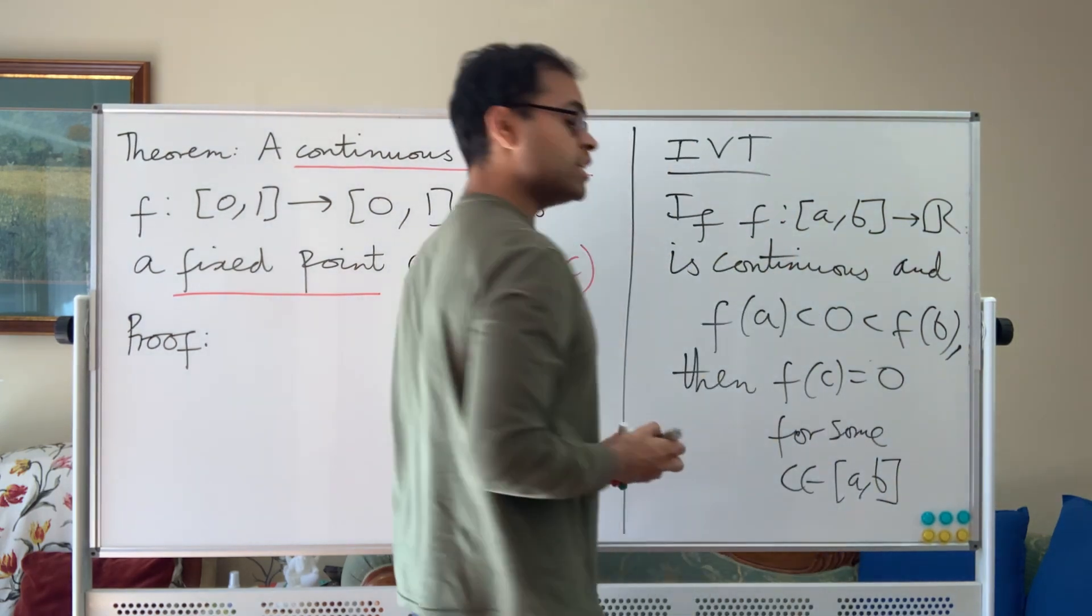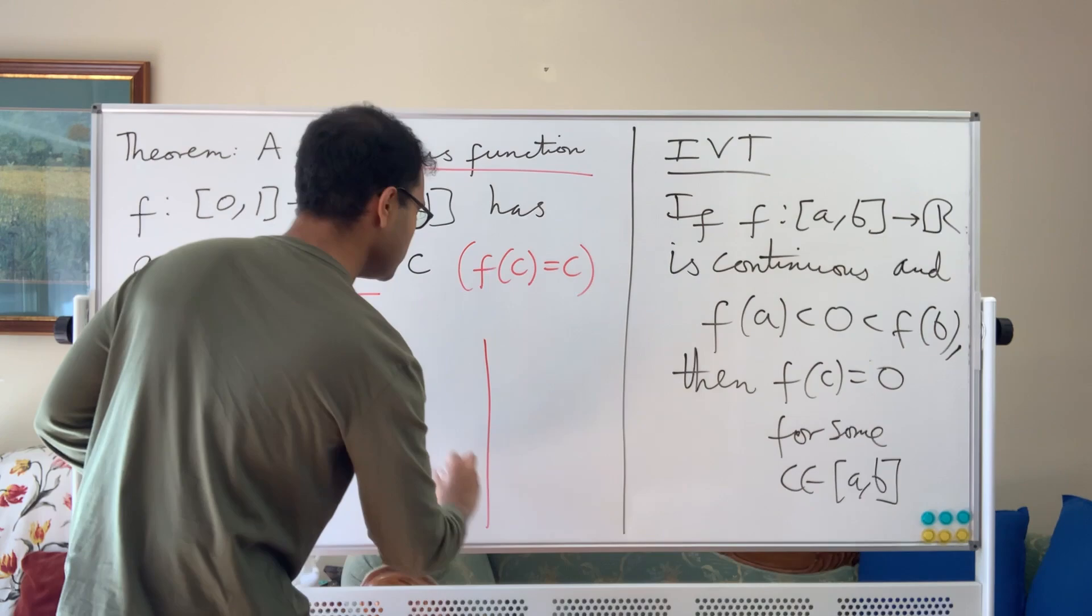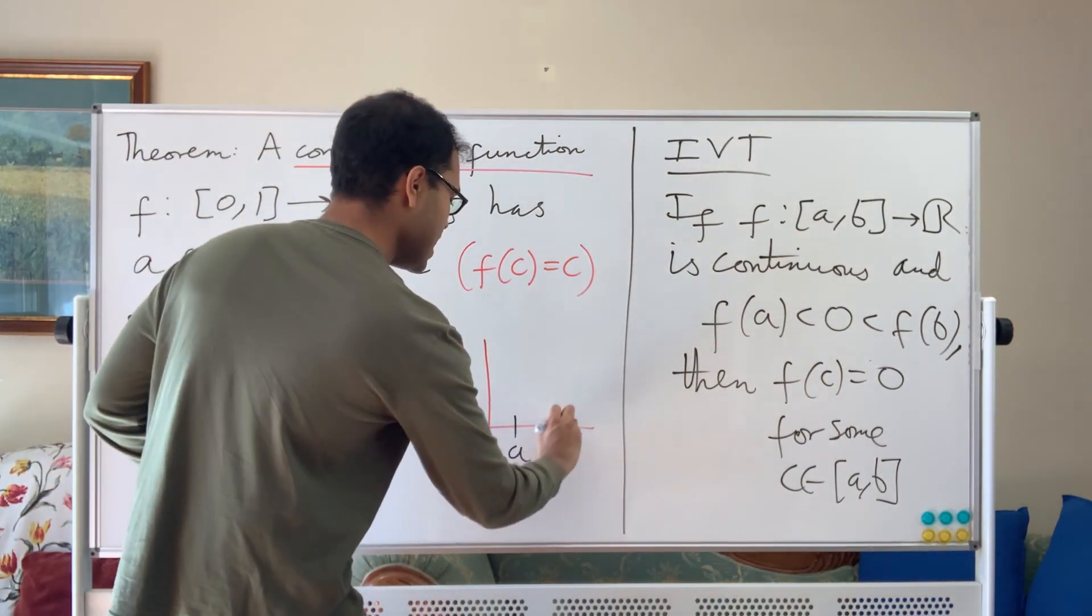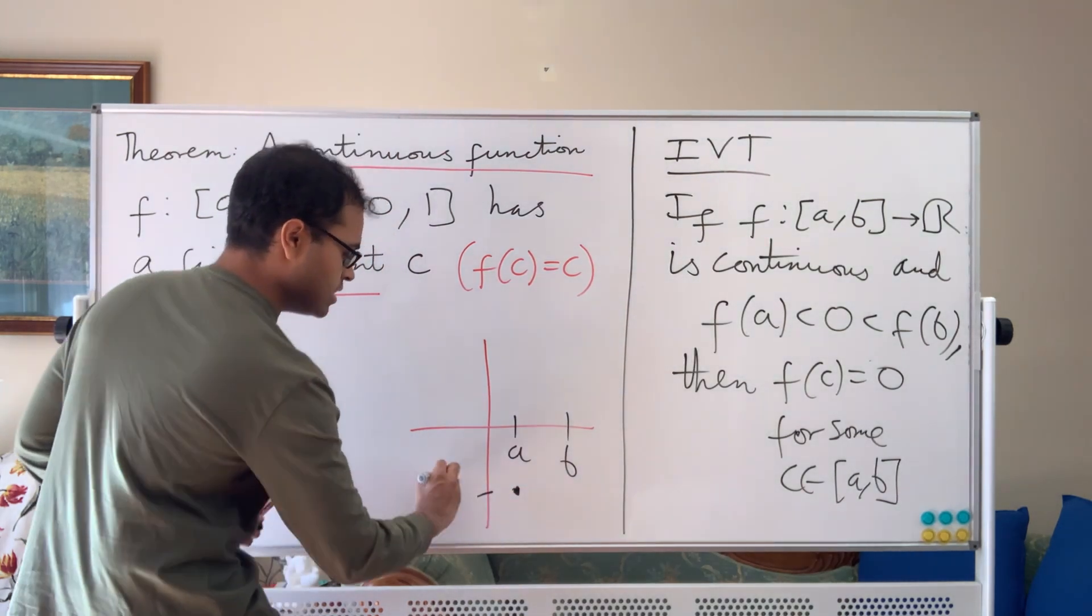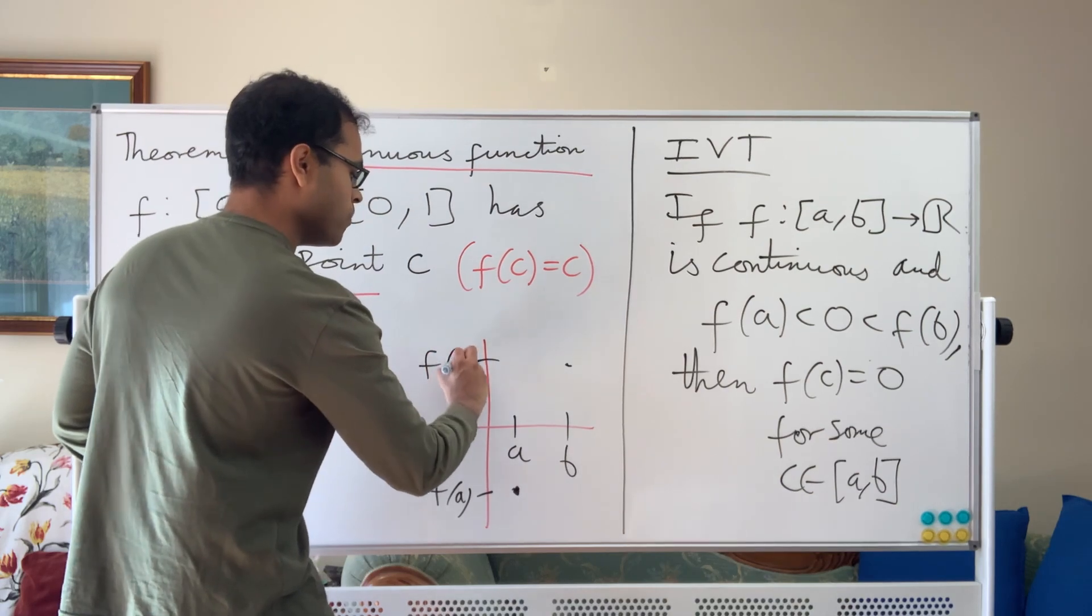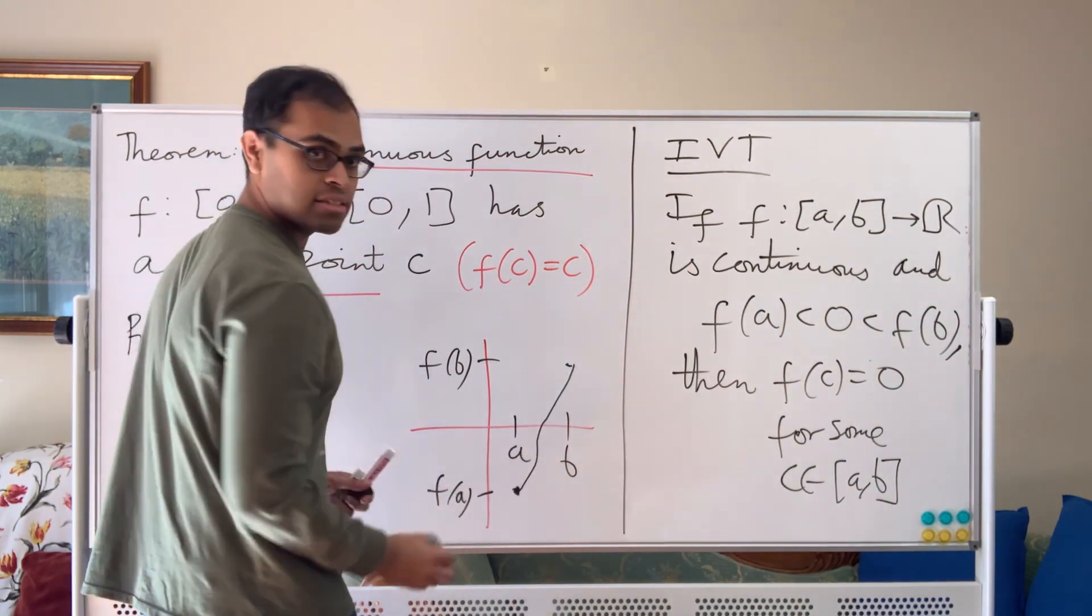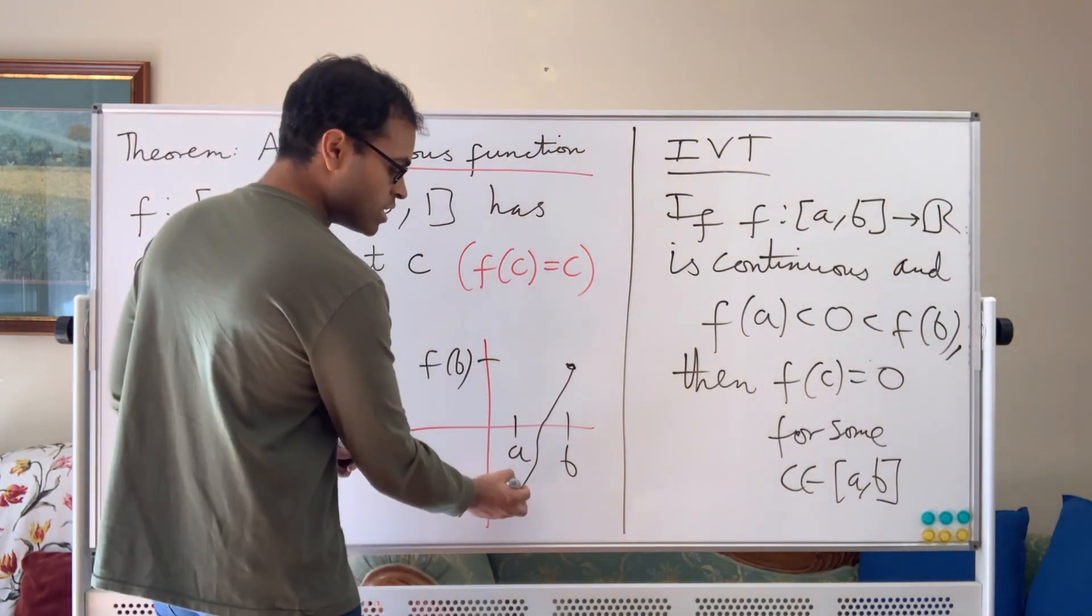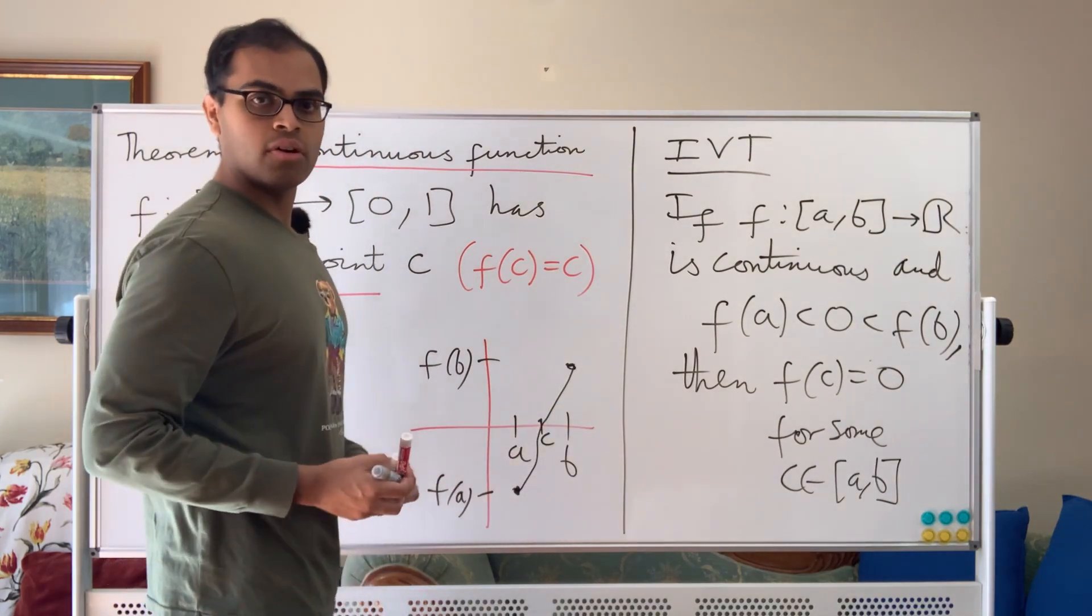The picture you should think of here is that if you have a and b, then somewhere here your graph starts f(a) is less than 0, and somewhere here f(b) is greater than 0. The only way you can connect the dots is you have to cross the x-axis, because the function is continuous. You can draw the graph with a single stroke of the pen, so there has to be some c where f(c) equals 0.